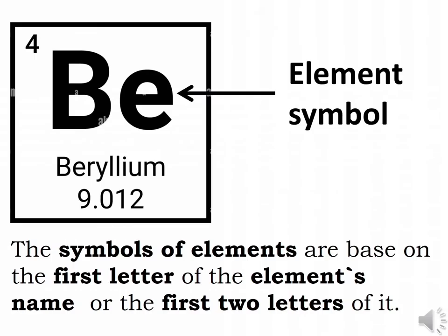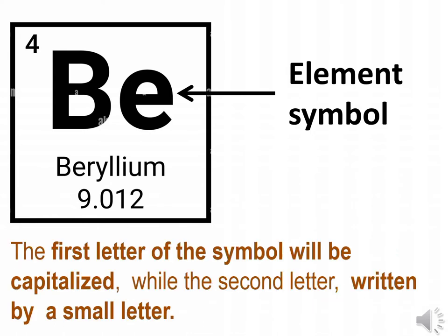The symbols of elements are based on the first letter of the element's name, or the first two letters of it. The first letter of the symbol will be capitalized, while the second letter is written as a small letter.